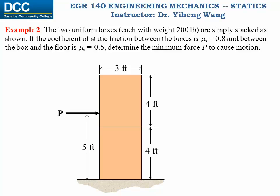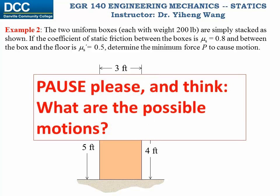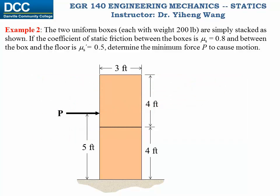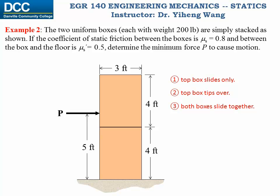Pause and think about how many possible motions there are. There are four: first, the top box slides only on the bottom box while the bottom stays static; second, the top box tips over while the bottom box stays static; third, both boxes slide together; and lastly, both boxes tip over together. We will calculate the required force P for each of these four scenarios and compare to find the answer.